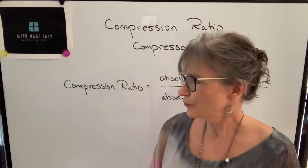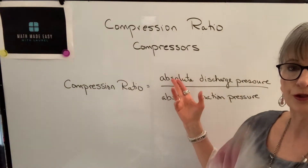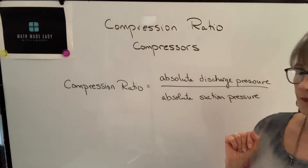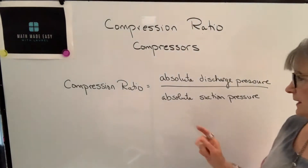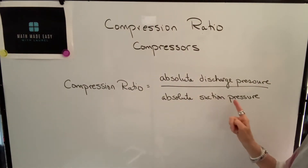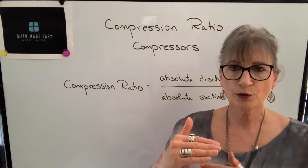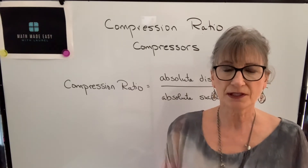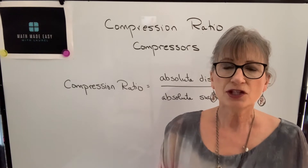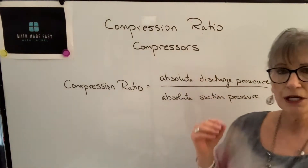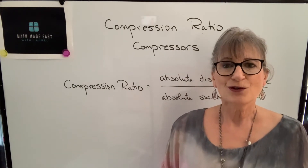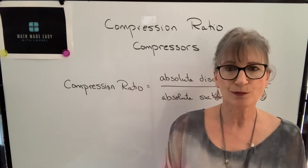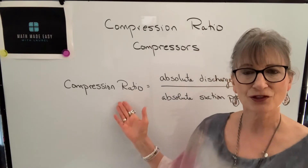The definition of a compression ratio is a ratio between two pressures in the compressor. The numerator is the absolute discharge pressure, and the denominator is the absolute suction pressure. Once they're in absolute units, you divide and get your ratio, expressed as something to one. The challenge is finding the absolute pressure, especially when working with vacuum pressures. I'll show how to convert vacuum and gauge pressures to absolute, then calculate the compression ratio.